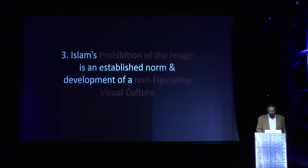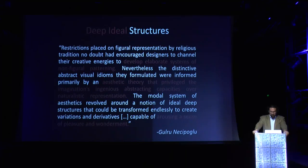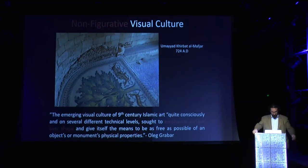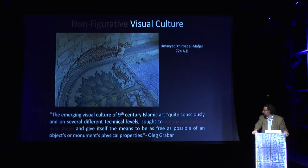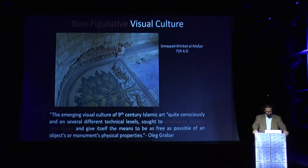Oleg Grabar discusses the development of this emerging visual culture of the ninth century. As early as the Umayyad period, one can see the prevalence of geometric patterns. Grabar describes this as a quite conscious attempt to emphasize surface over shape — but it can be slightly misleading, because it's not so much surface being emphasized as something else entirely. According to the Neoplatonic notion of mathematical being, when a surface is covered with these patterns, the space in between opens up a space of its own.